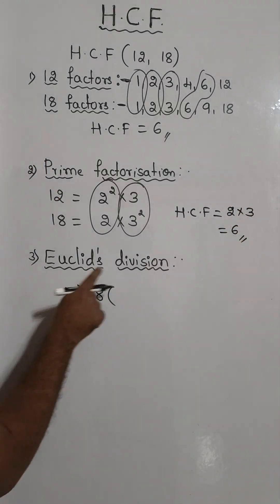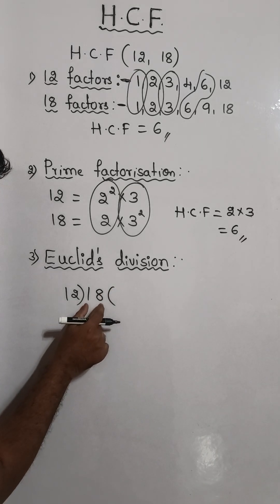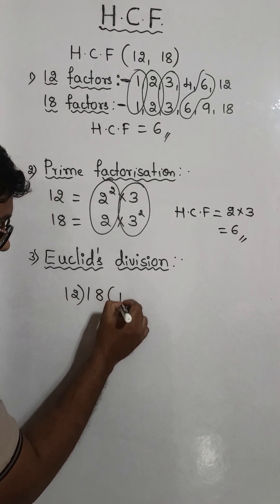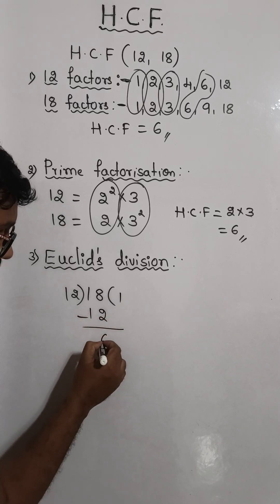Now by Euclid's division method, divide 18 by 12. 12 goes into 18 one time, which is 12. Now the remainder is 6.